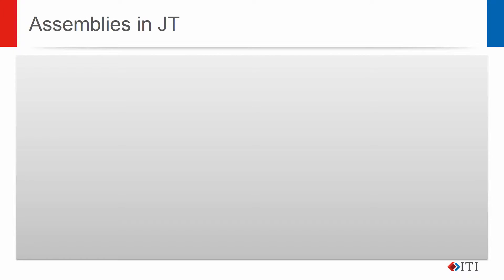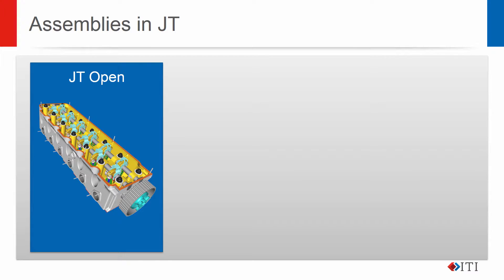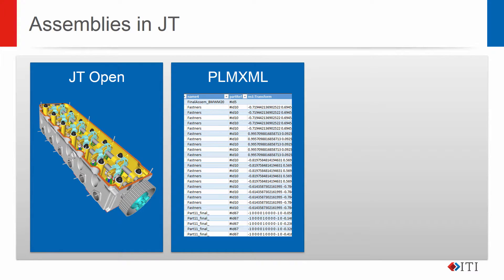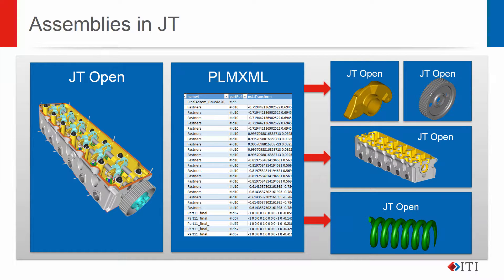As well as containing single parts, JT files can also contain multiple parts and assembly structures. External PLM XML files can also be used to define a JT assembly structure. PLM XML files define the assembly structure and other part information and reference the individual external JT part files, allowing the assembly structure within the PLM XML file to be manipulated separately from the JT files.